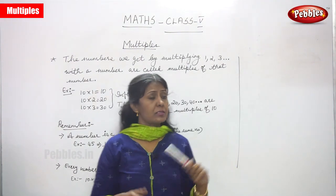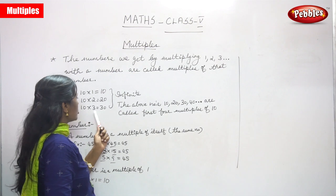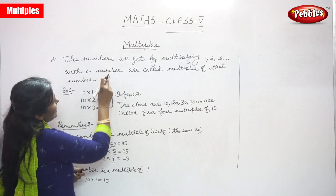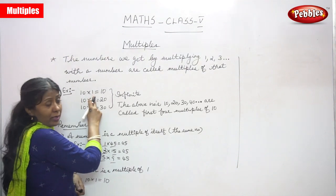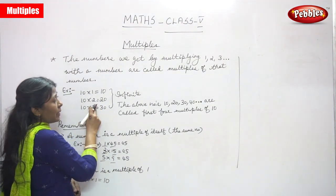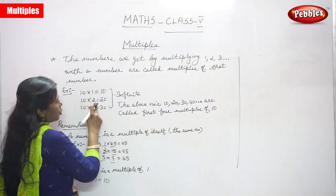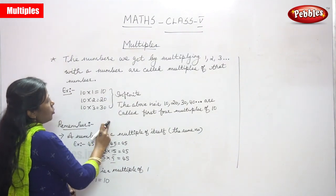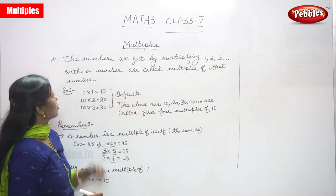I will give you a proper explanation for this definition. 10 into 1 is equal to 10, 10 into 2 is equal to 20, 10 into 3 is equal to 30. So the numbers we get by multiplying 1, 2, and 3 with the number are called multiples of that number.